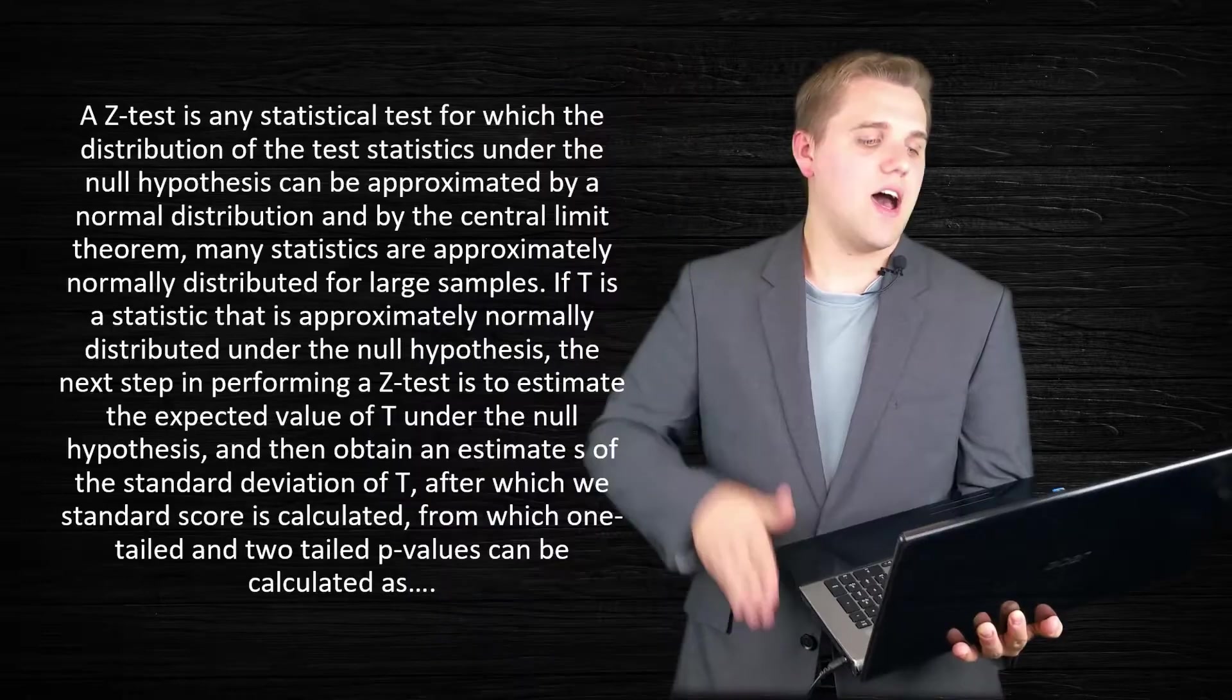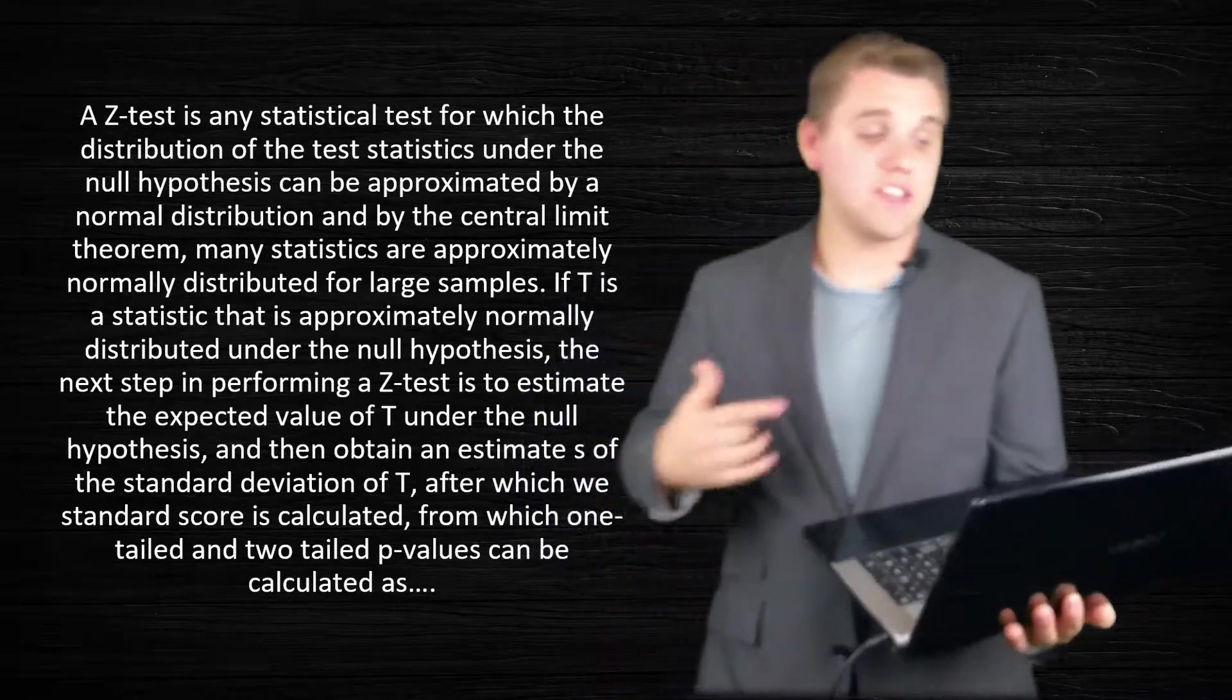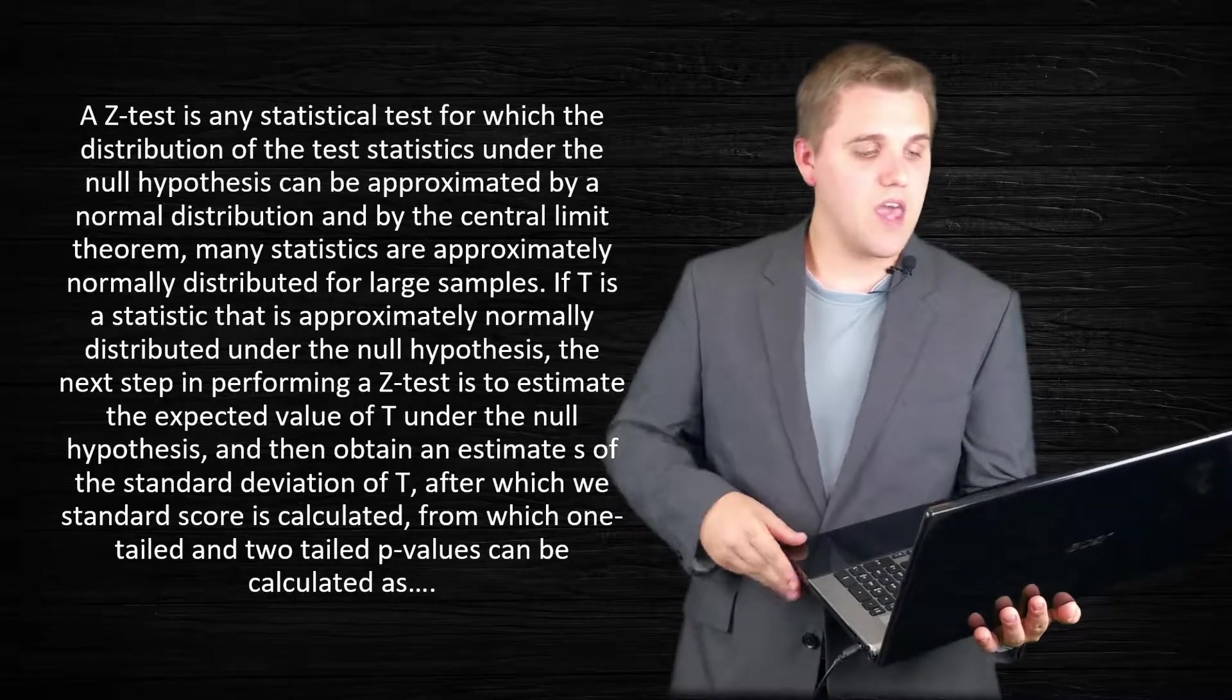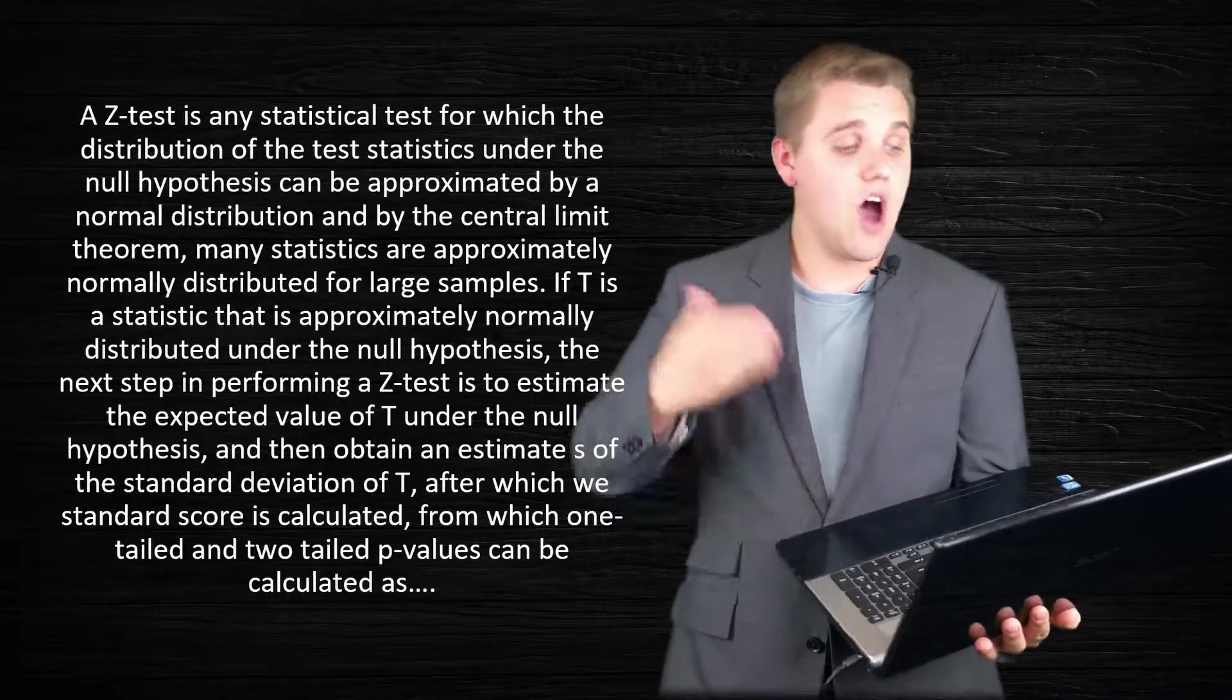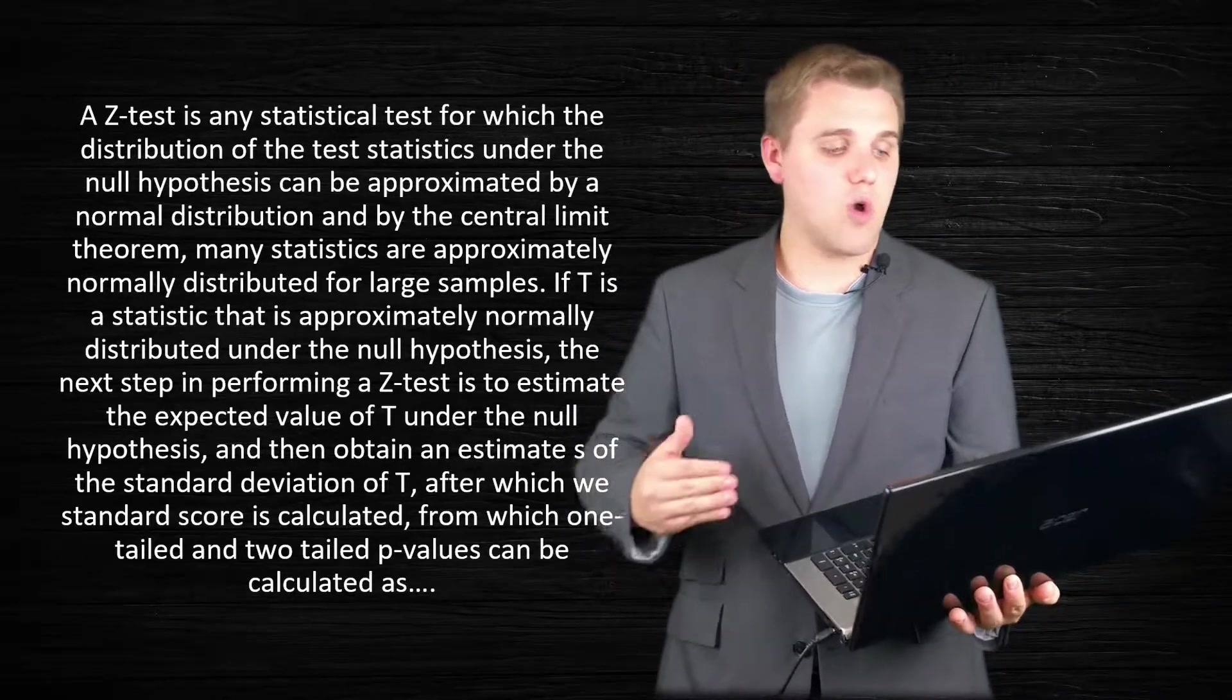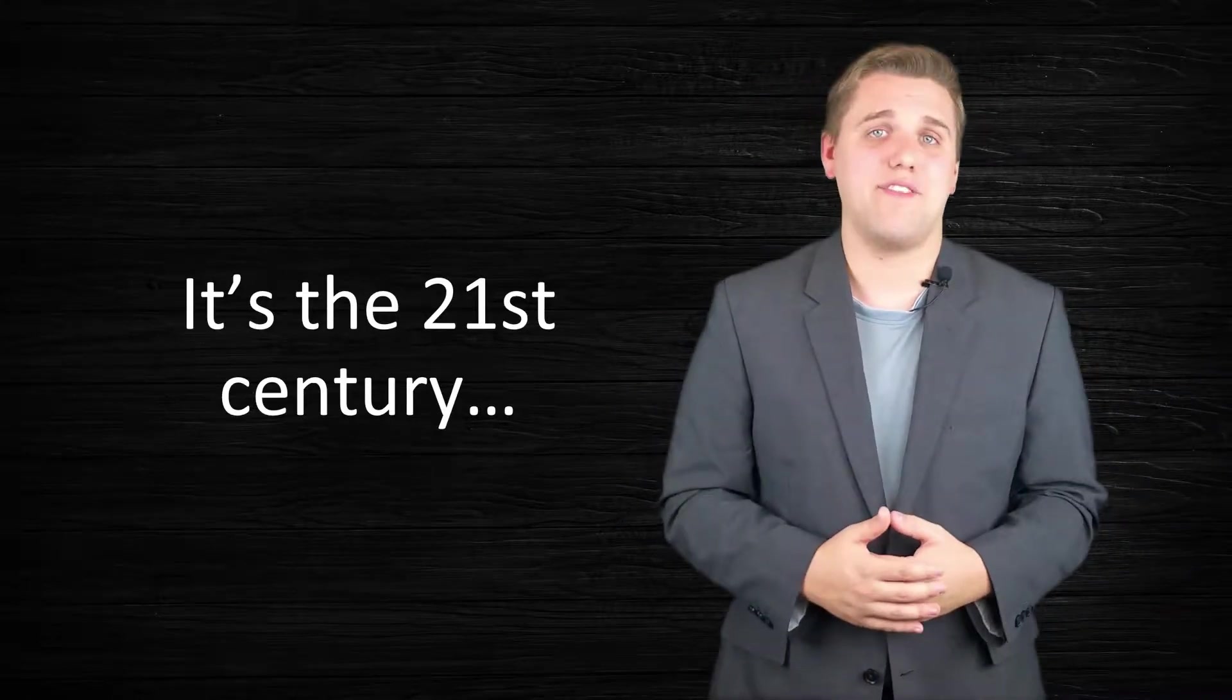This is the Wikipedia response for what is a Z-Test. A Z-Test is any statistical test for which the distribution of the test statistics under the null hypothesis can be approximated by the normal distribution and by the central limit theorem, many statistics are approximately normally distributed for large samples. If T is a statistic that is approximately normally distributed under the null hypothesis, the next step in performing a Z-Test is to estimate the expected value of T under the null hypothesis and then obtain an estimate S of the standard deviation of T after which the standard score is calculated from which one-tailed and two-tailed... Whoa, slow down. There's an overwhelming amount of information in that.